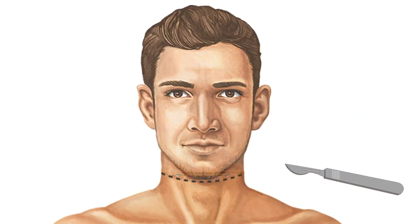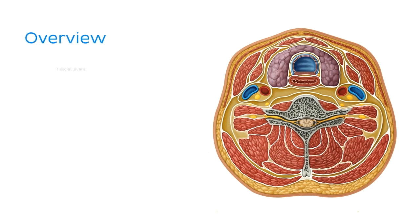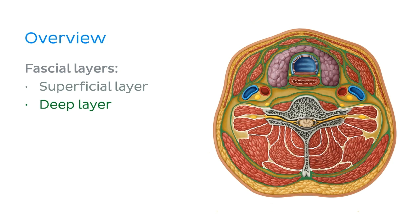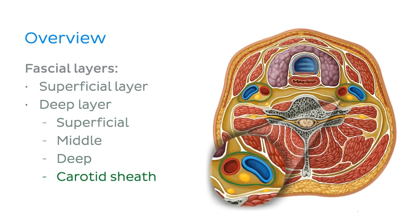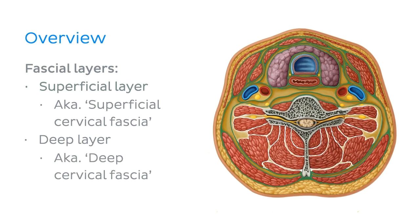For this tutorial on compartments of the neck, we'll be looking at a transverse section through the neck. We'll begin by identifying different layers of fascia in the neck, specifically the superficial layer and the deep layer, which is further subdivided into the superficial, middle and deep layers, with the carotid sheath sometimes identified as a separate division. For easier reference, the superficial layer of cervical fascia is also simply called the superficial cervical fascia, while the deep layer is commonly referred to as the deep cervical fascia.